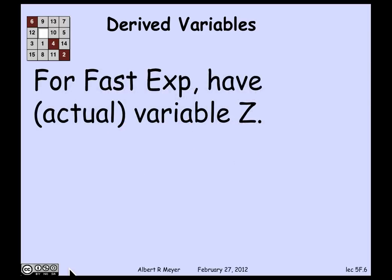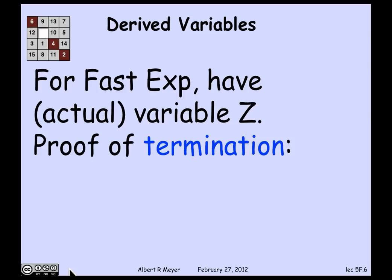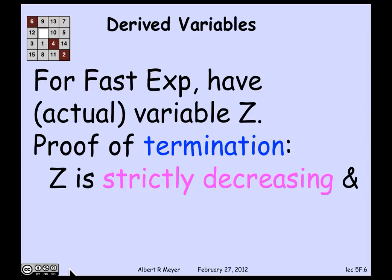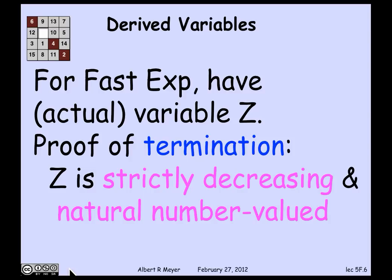In the case of fast exponentiation, we looked at the actual variable z, which was part of the invariant and a crucial part of the program. What we noticed about z was that it was strictly decreasing and natural number valued. As a matter of fact, we noticed that it halved at each step, but its values were non-negative integers, and it's strictly decreasing at every step.